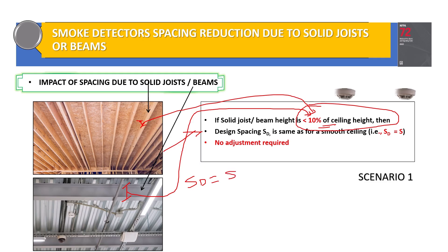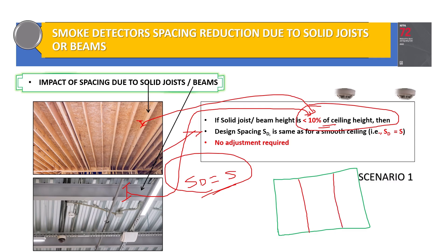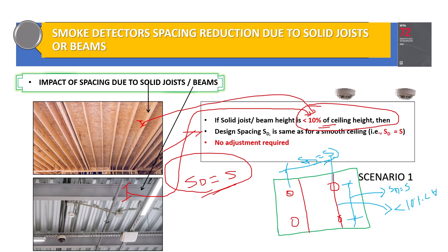In Scenario 1, the design spacing will be equal to the nominal spacing and no adjustment is required. So the design spacing SD equals S, both perpendicular and parallel to the beam or joist. S is the nominal spacing of 30 feet, so we use 30 feet by 30 feet. There is no reduction factor for this particular scenario.